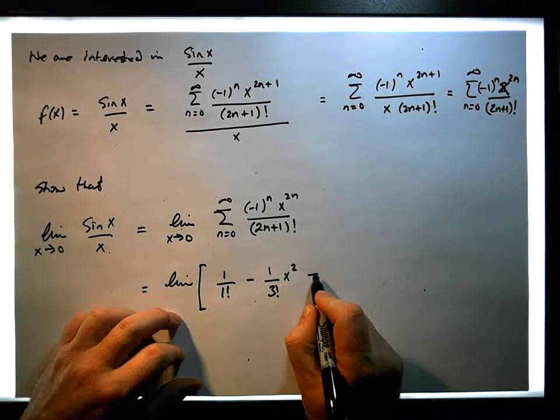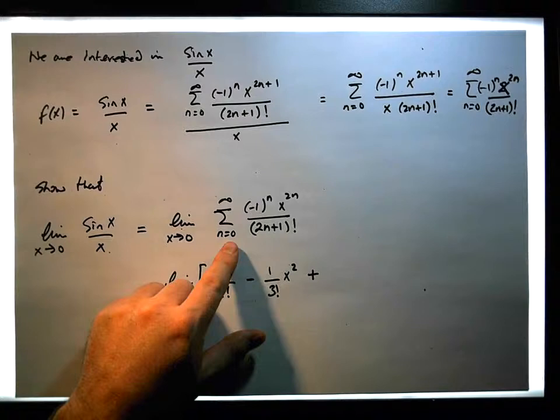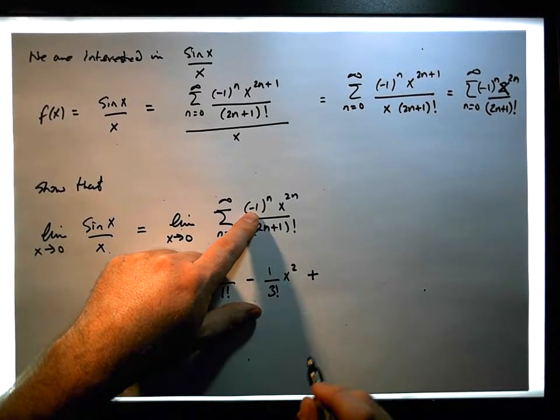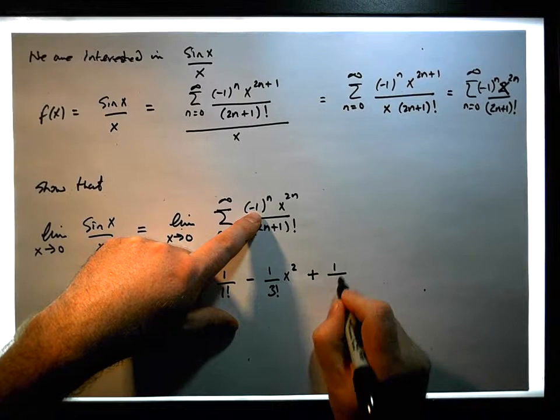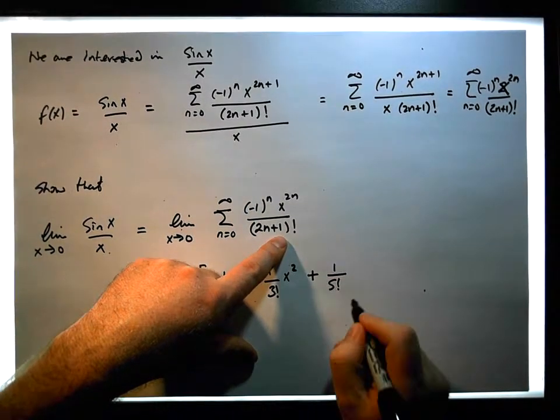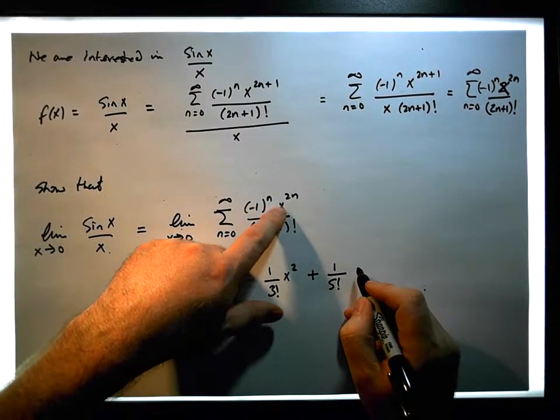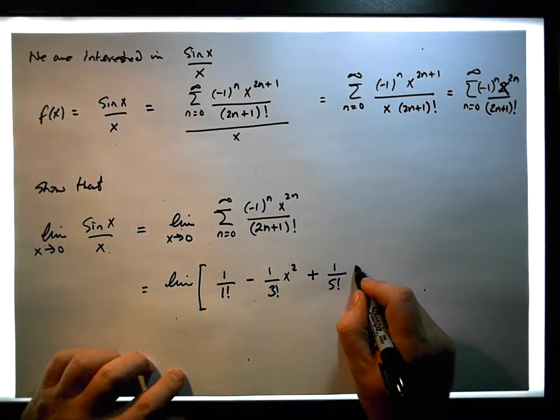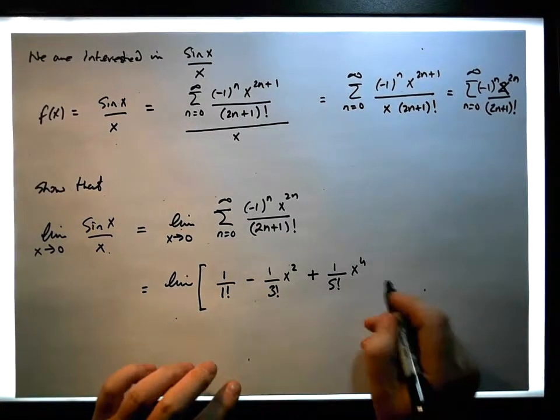Plus, the next one, when n equals 2, this is going to be minus 1 squared, which gives us a positive, so it's going to be 1 over 5 factorial times x to the power of 2 times 2, which is x to the power of 4. So you can actually see what's happening now.